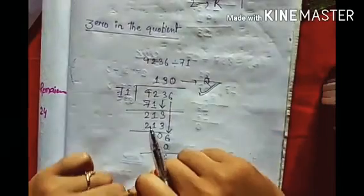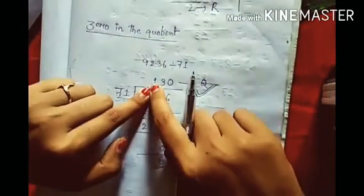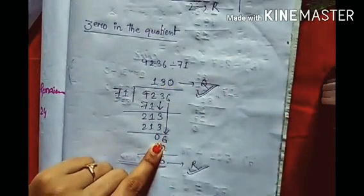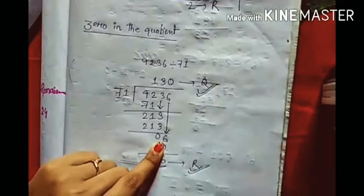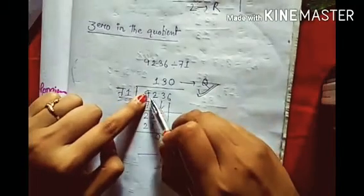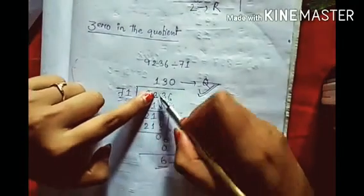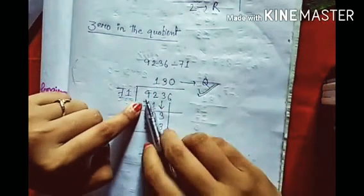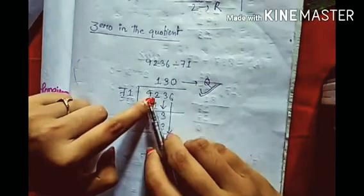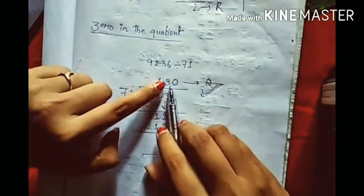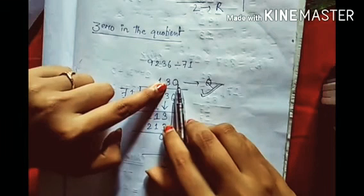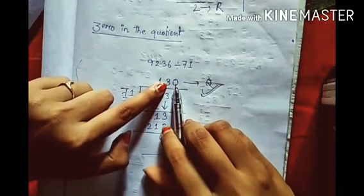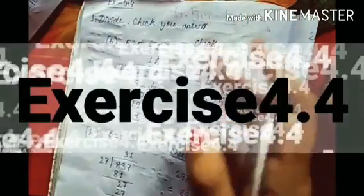The remainder is 6 and the quotient is 130. Do not make the mistake of writing only 13 with remainder 6. The ones place cannot be empty. We started with a two-digit portion, meaning we start from the hundreds place in a four-digit number, going to tens place and then ones place. Ones place cannot be empty, so we write zero there.